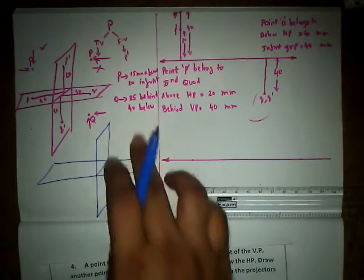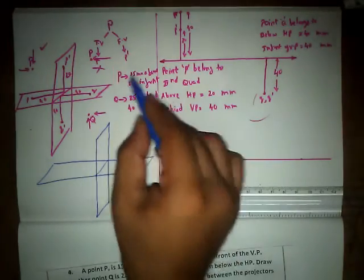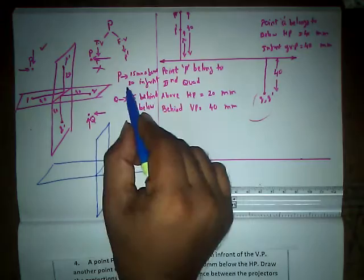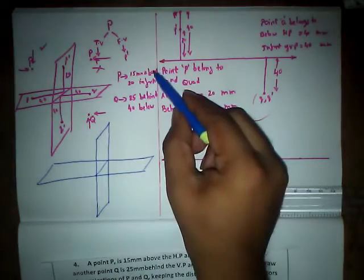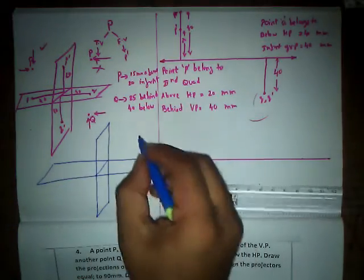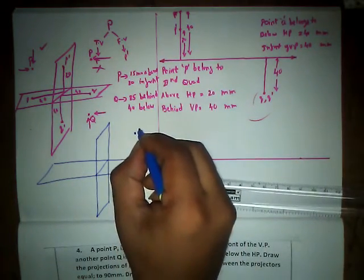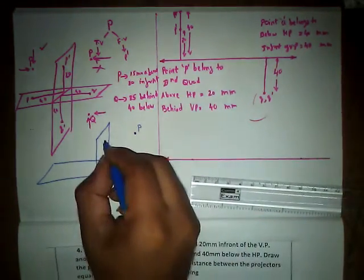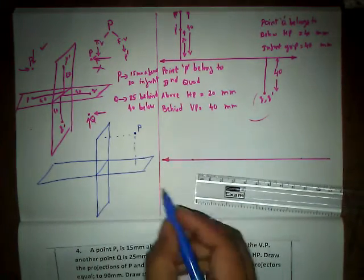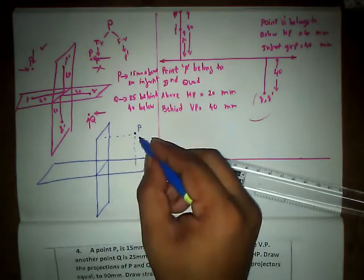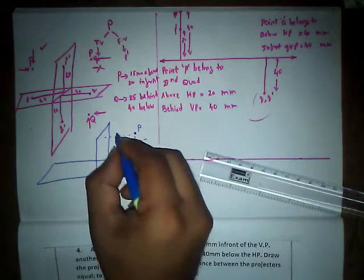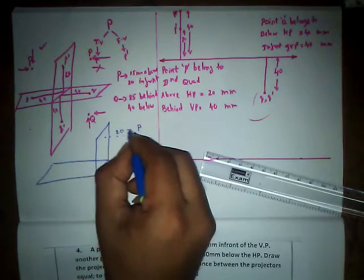These are the four quadrants. Now let us check point P. Point P is 15mm above HP and 20mm in front of VP, so we have the combination 'above, in front', meaning the point is going to lie in the first quadrant. Let us put dotted lines from the plane. The distance from HP is 15mm and the distance from VP is 20mm in front.